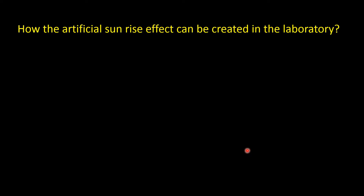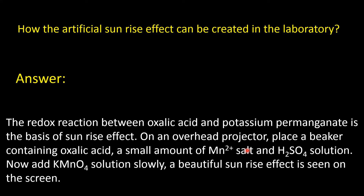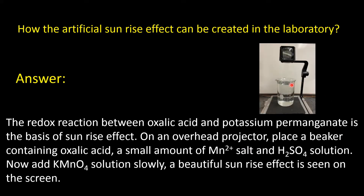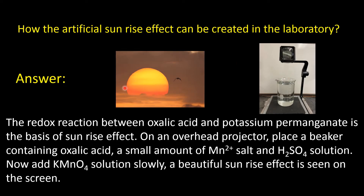Next question: how can the artificial sunrise effect be created in the laboratory? This redox reaction between oxalic acid and potassium permanganate is the basis of this sunrise effect. In a beaker, you take oxalic acid solution, add a little manganese salt, and then add sulfuric acid. The manganese salt acts as a catalyst. Then slowly add potassium permanganate, and a wonderful sunrise effect will be seen on the screen.